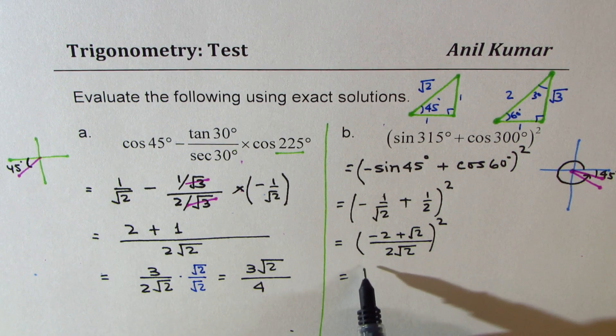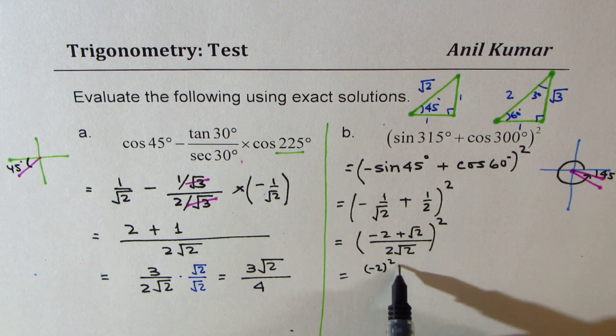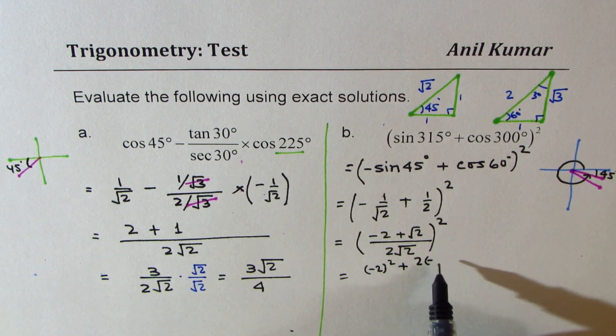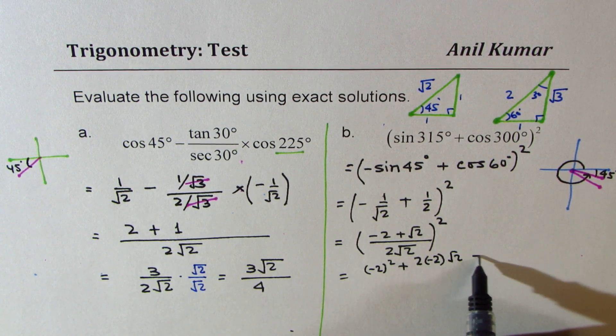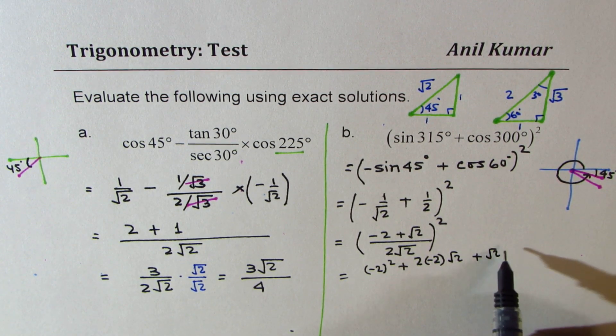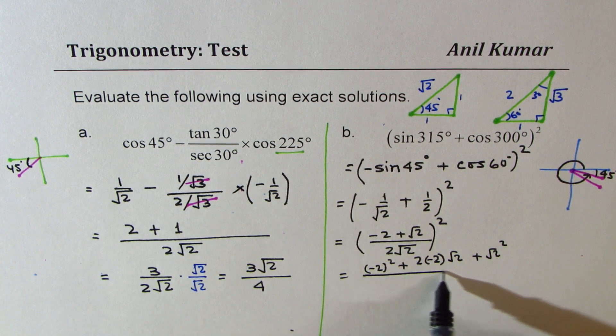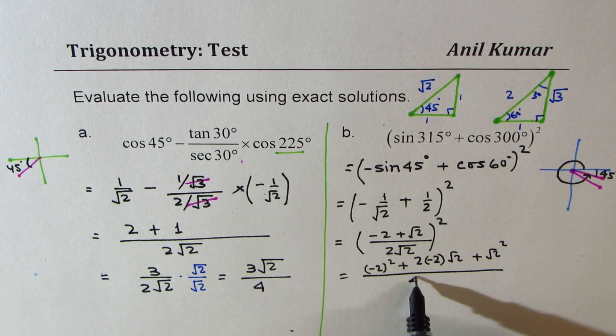So we get minus 2 square plus 2 times minus 2 times square root 2 plus square root 2 squared divided by square of this means 4 times 2.